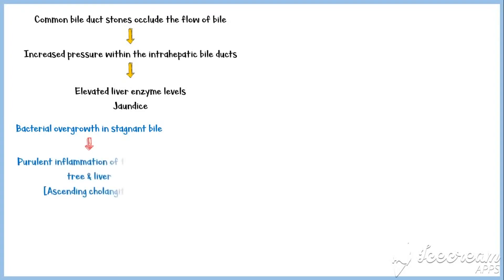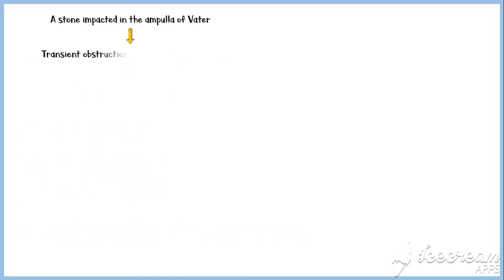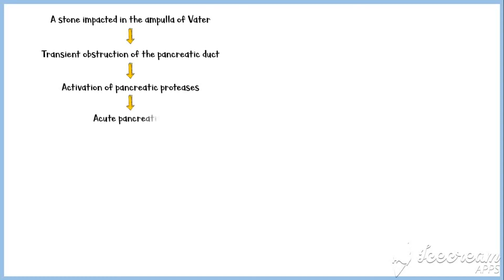Bacterial overgrowth in stagnant bile above the obstruction can lead to purulent inflammation of the biliary tree and the liver, a condition known as ascending cholangitis. Characteristic features are fever, jaundice, and right upper quadrant pain, also known as Charcot's triad. Patients may rapidly develop septic shock if the obstruction is not relieved. A stone impacted at the ampulla of Vater may transiently obstruct the pancreatic duct, leading to in-situ activation of pancreatic proteases, causing acute pancreatitis.